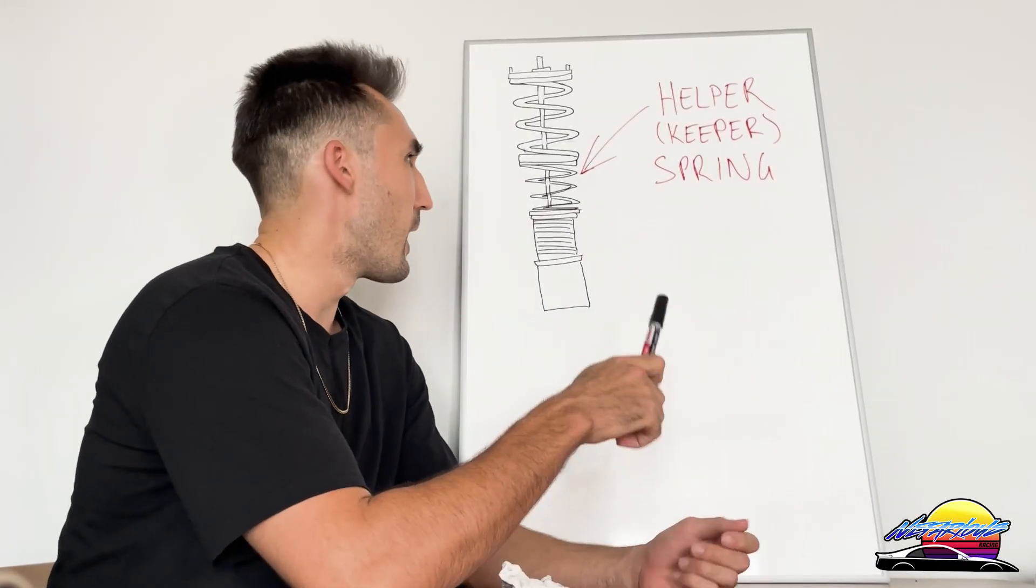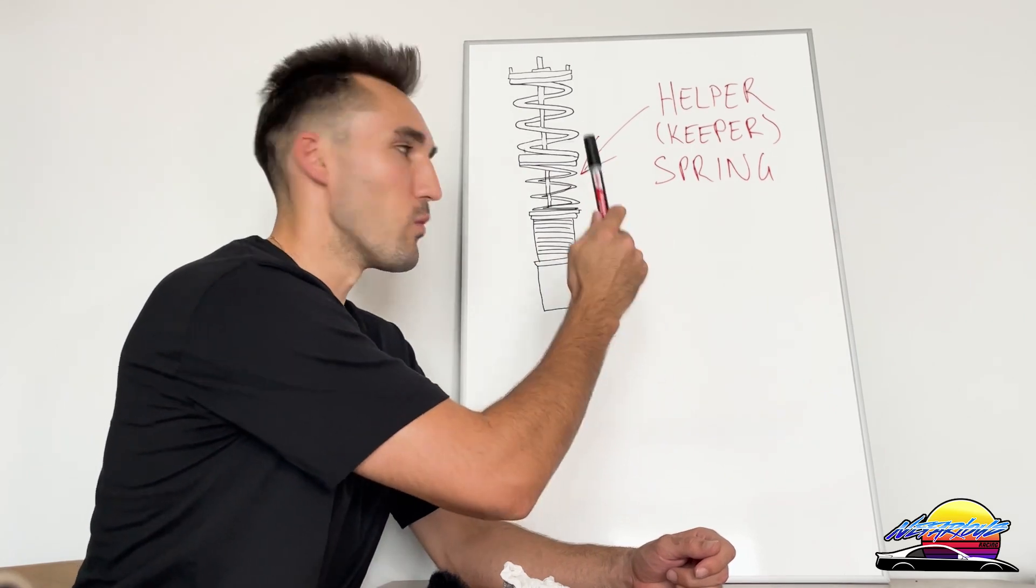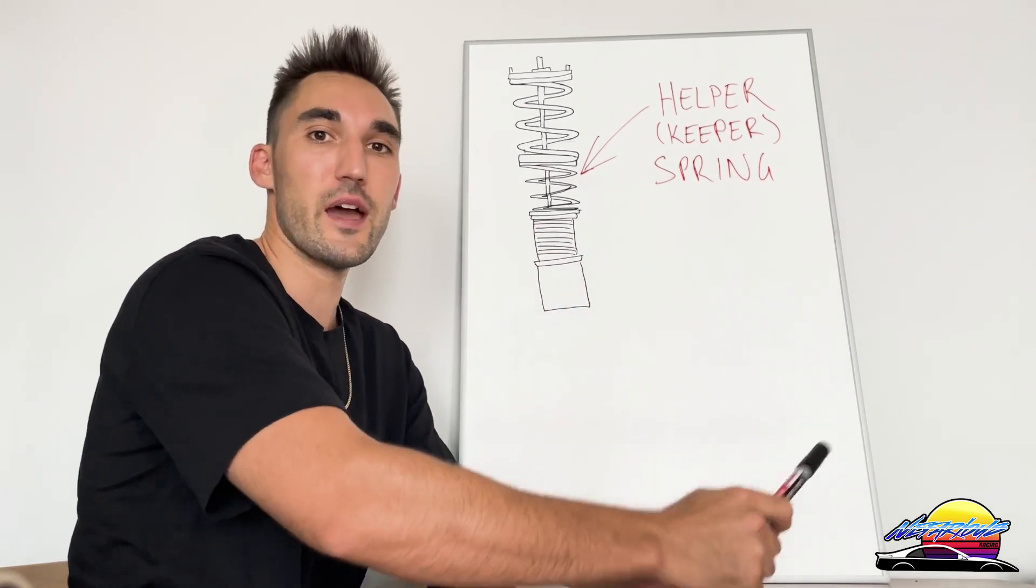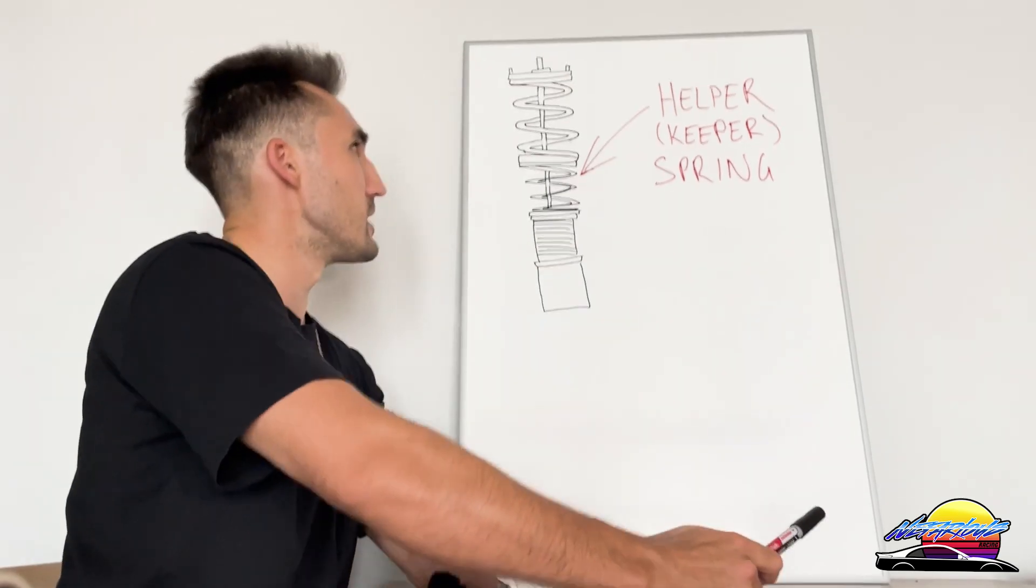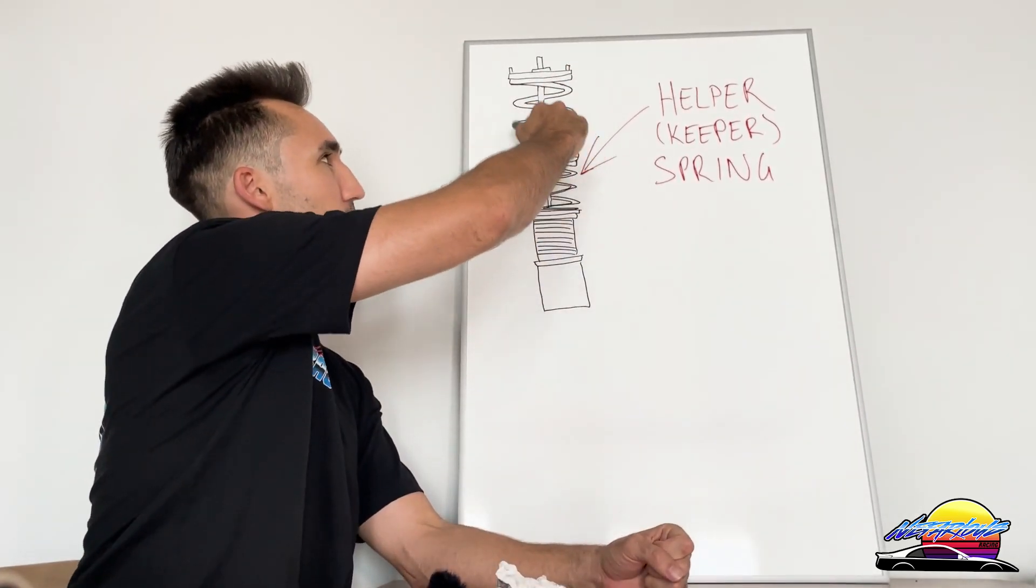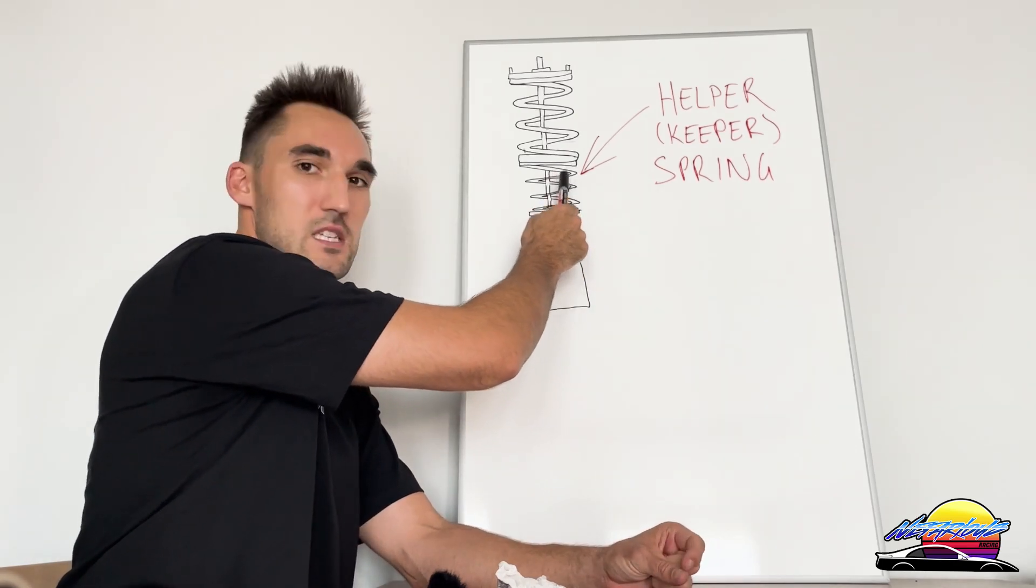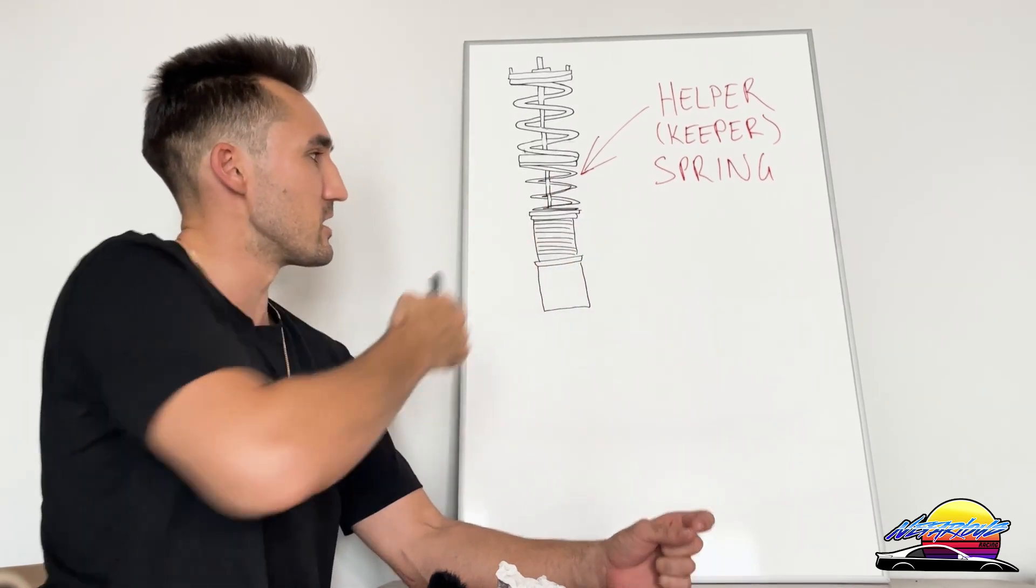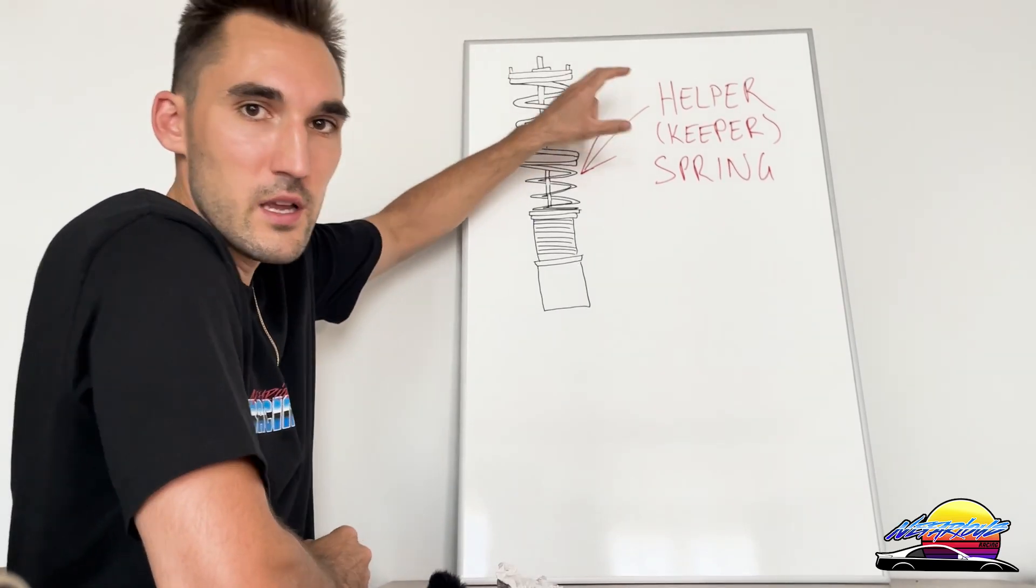In this video, I'm going to go over what helper springs are on coilovers, what purpose they serve, and whether you actually need them on your kit. There are coilover kits where they have a main spring at the top, which is the normal thick-looking spring, and then a very skinny spring underneath it that sits on a separate section like this. That's what's called the helper spring, otherwise known as the keeper spring.